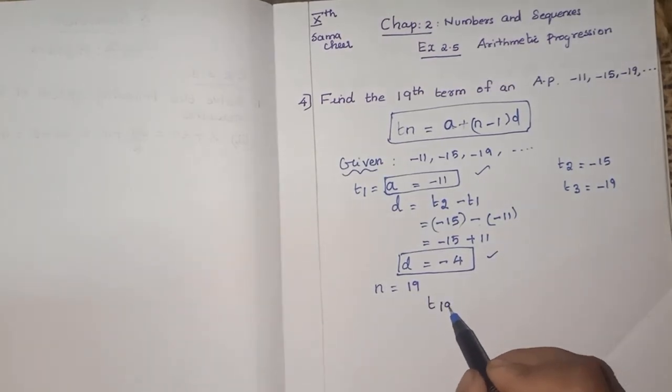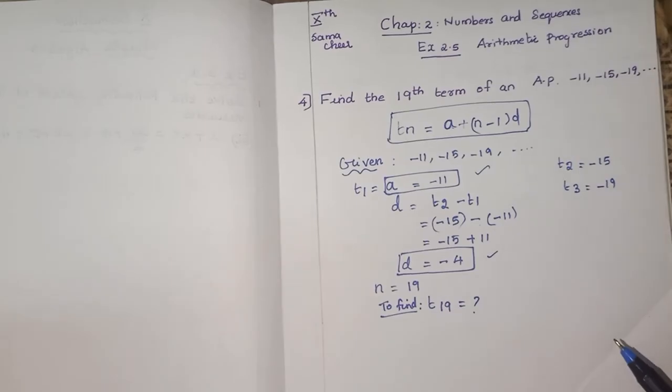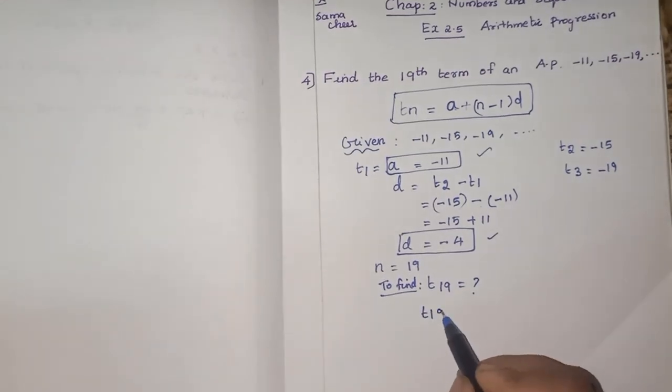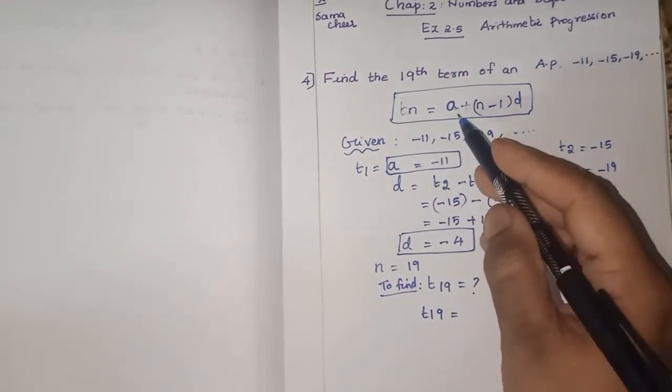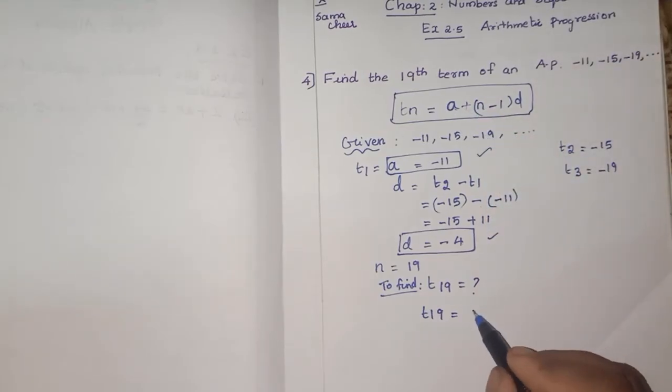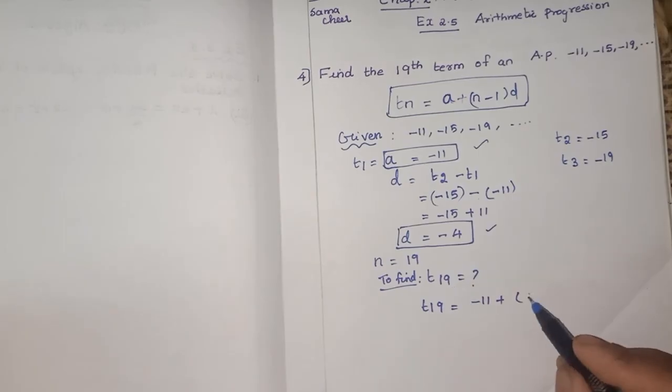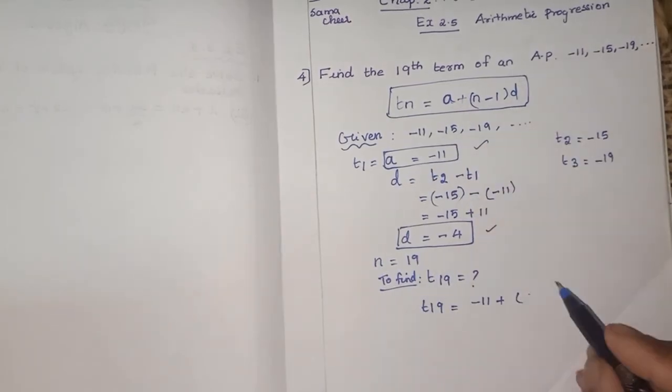The question they have asked 19th term, that is only N. So N is equal to 19 means what will happen? T19, that is only asked. To find what? We need to find according to the question T19. So T19 is equal to, what is our A? A formula as per formula, minus 11 plus, open the bracket. What is our N? 19.